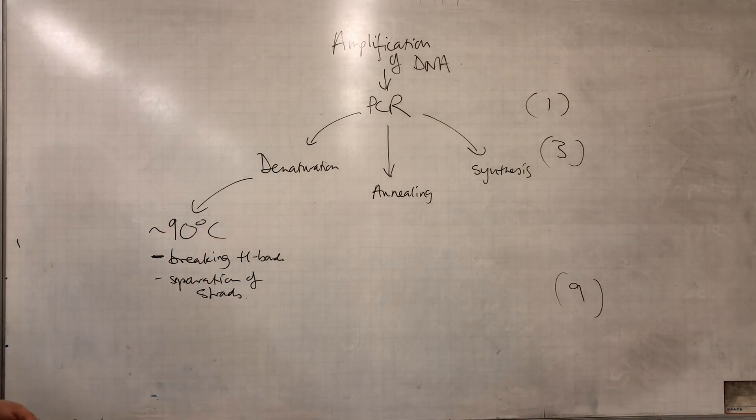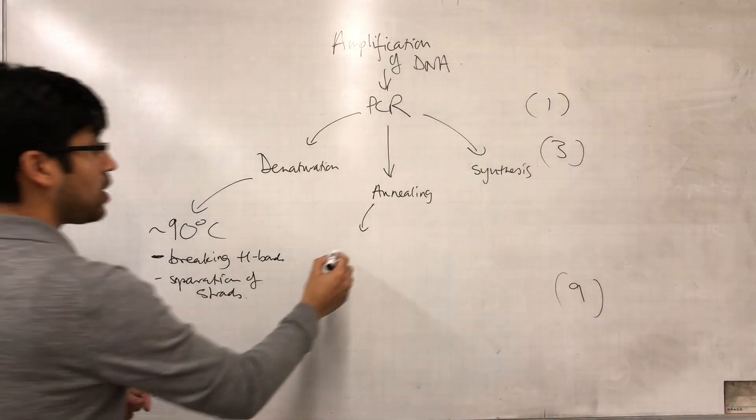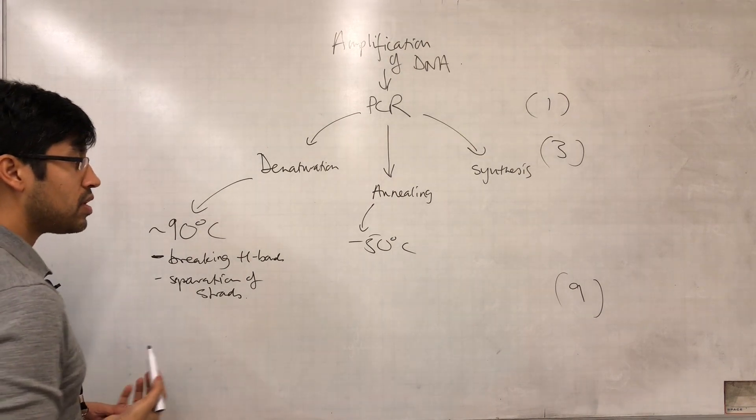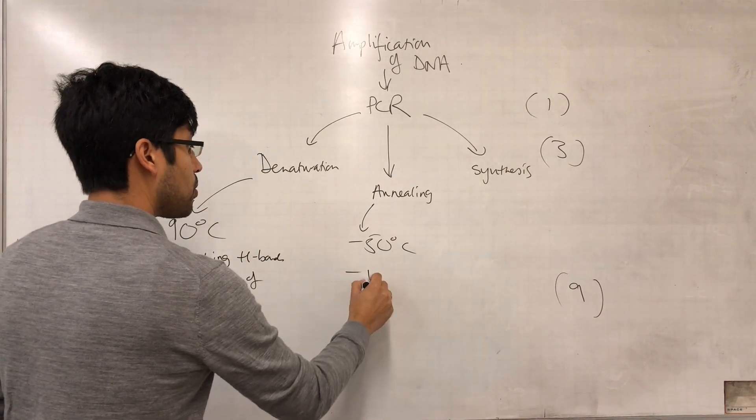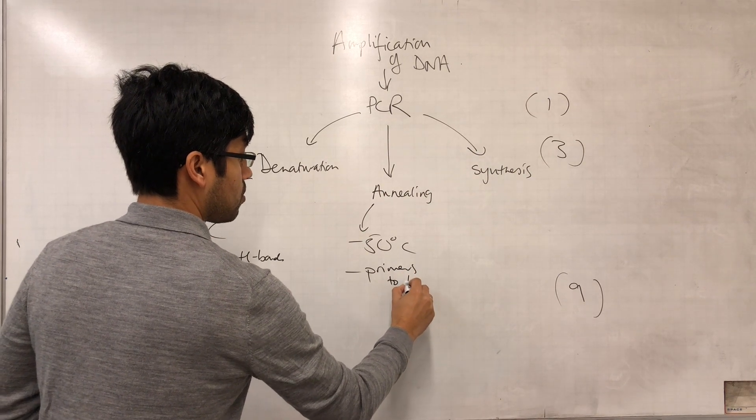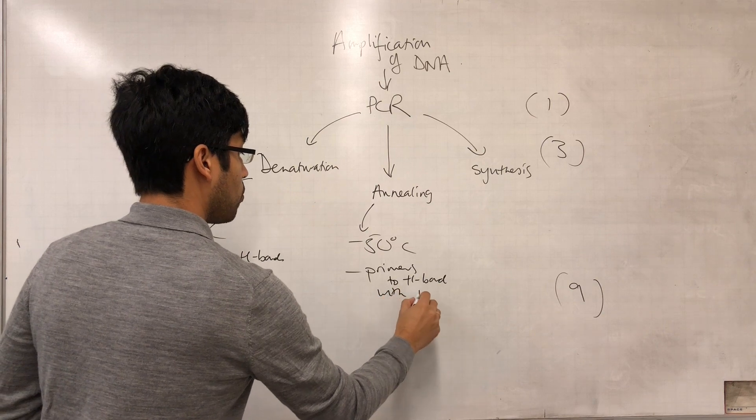Then we can detail annealing: that we lower the temperature to 50 degrees which causes the primers to hydrogen bond with the DNA.